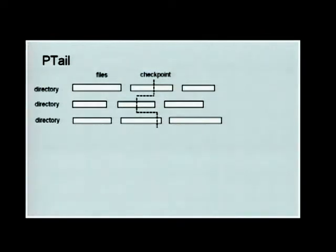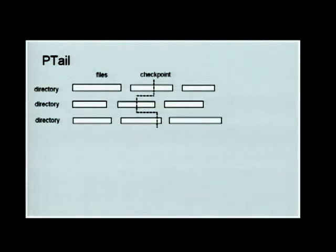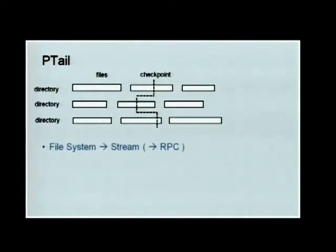The last component in Data Freeway is called PTail. The idea of PTail is to allow tailing of data from different directories at the same time. These directories each have files, and PTail tails different directories simultaneously. PTail knows the location of the file offset in each directory, so from the file system it generates a data stream that can eventually be sent back to RPC if needed.